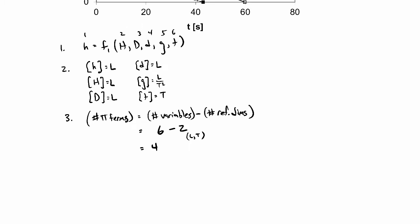Step four is to determine the dimensionless terms using the method of repeating variables. We need to choose repeating variables — the number of repeating variables equals the number of reference dimensions, so we'll need two. I'll choose the initial height H and gravitational acceleration g. This step is not unique; different people may choose different repeating variables. But the number of pi terms (four) and the number of repeating variables (two) should be the same for everyone.